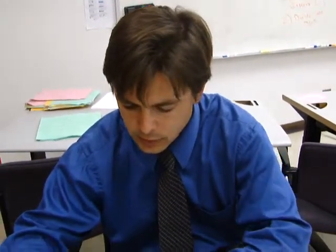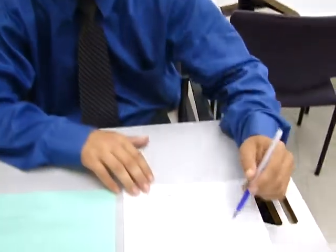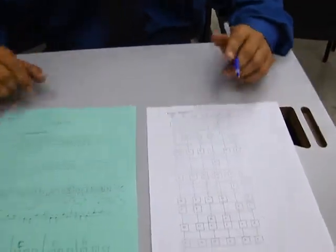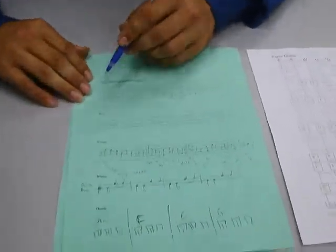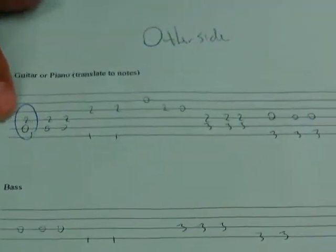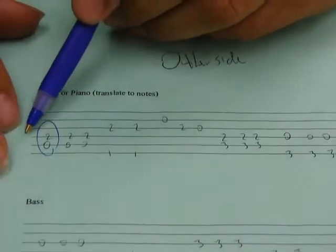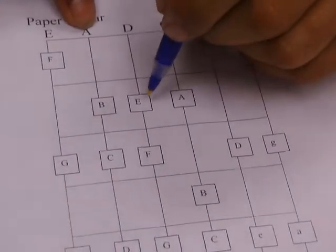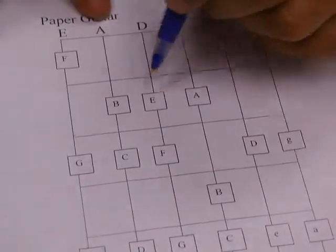Right now we're going to focus on translating the tablature from the song Other Side into regular standard notation. So we'll start right here. The first notes I see here are a zero and a two grouped together on the A string and the D string. So a zero on the A string is an A, and a two on the D string is an E. So I have an A and an E.